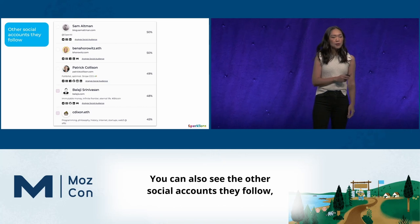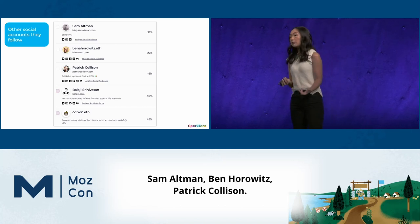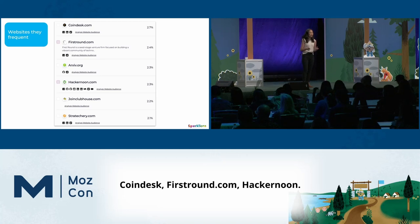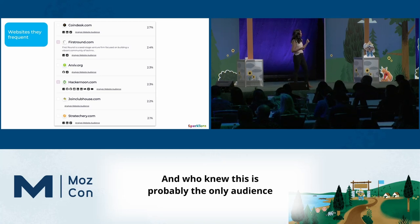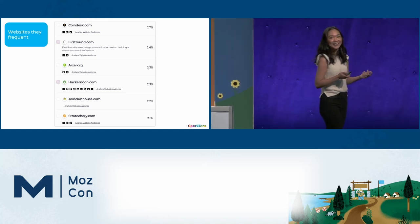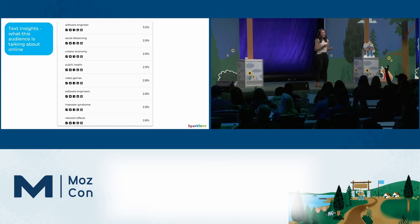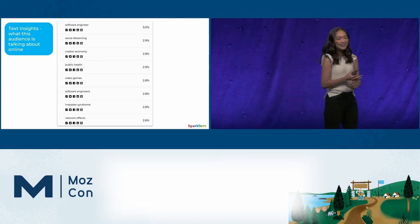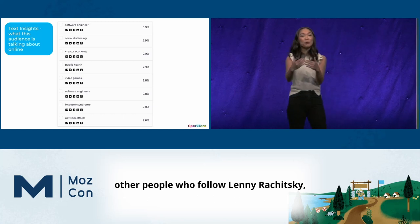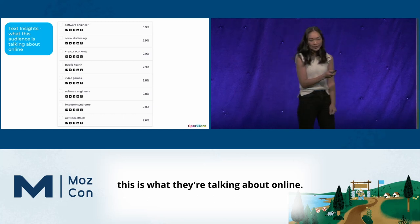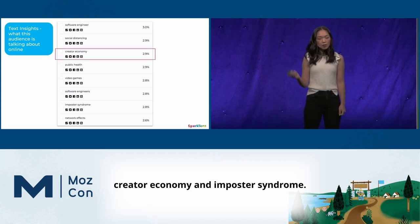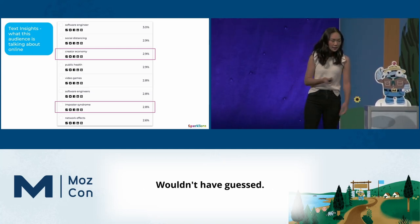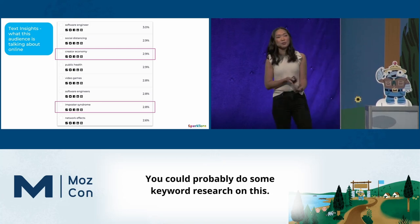You can also see the other social accounts they follow — Sam Altman, Ben Horowitz, Patrick Collison — and the websites they frequent: Coindesk, Firstround.com, Hacker Noon. You can also see their text insights — what this audience is talking about online. Looking at topics like 'creator economy' and 'imposter syndrome': putting 'creator economy' into Google Trends shows the term has become a lot more popular over the past year or two — possibly demand for content there. Same with 'imposter syndrome,' which has become more popular over the past two years or so.